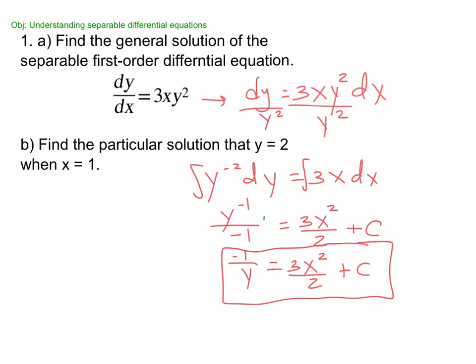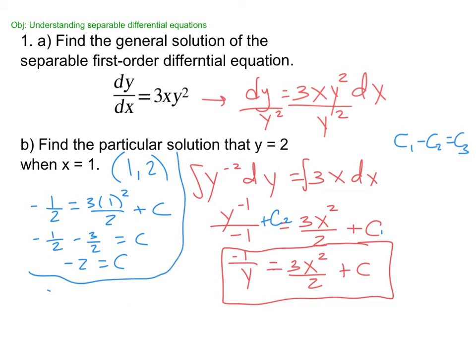Now, to find the particular solution, basically we're going to solve for C and then plug in. Now, notice I've only put one C. There's technically a C over here too. So this is like C1, C2, but then C1 minus C2 is just C3. So I always put my C on the X side. It doesn't actually matter. I just want to make my life as easy as possible. So a really picky teacher would make you have two Cs, but I'm not going to do that. Okay, so they're giving me the point (1, 2), so I'm going to plug that in. So I have negative 1/2 equals 3 times 1² over 2 plus C. So that's negative 1/2, and then I'm subtracting 3/2. So that's negative 2 equals C.